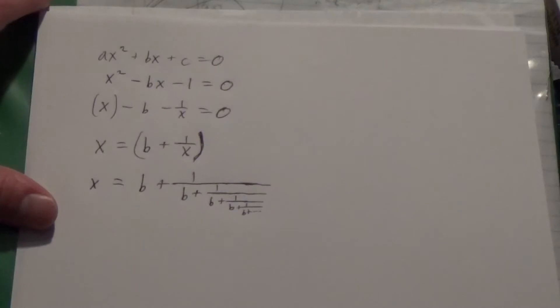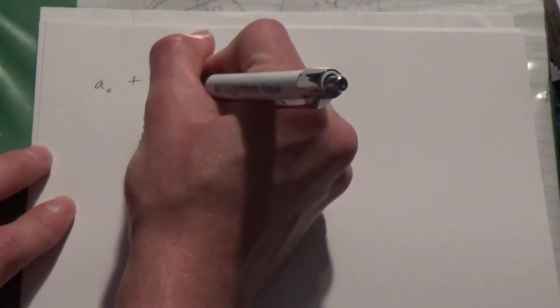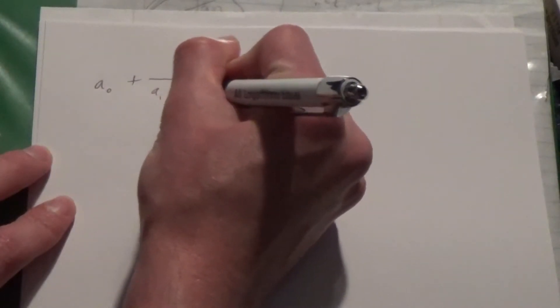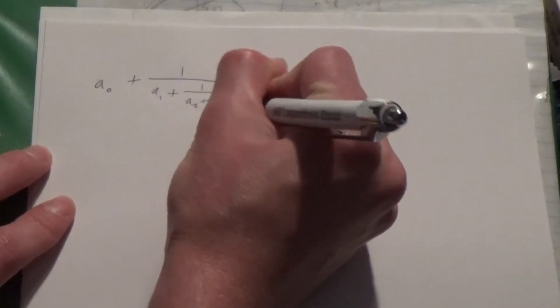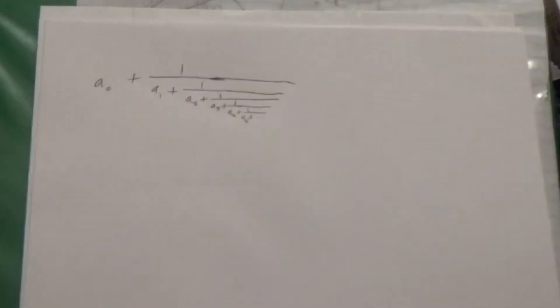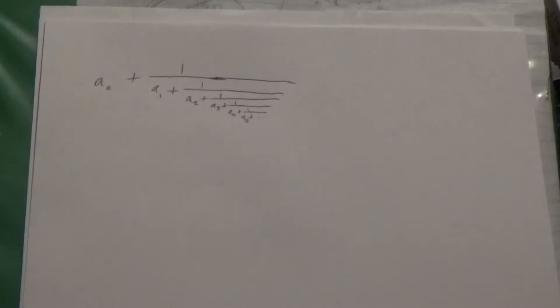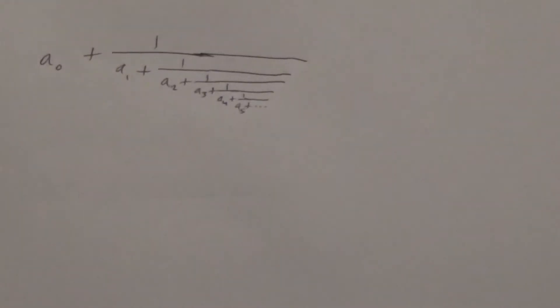But the general form of any continued fraction expansion is, in fact, a zero plus one over a sub one plus one over a sub two plus one over a sub three plus one over a sub four plus, that whole kind of quantity. It's this same sort of structure, but I'd like to emphasize that these a values, a sub zero, a sub one, a sub two, a sub three, they need not be equal to each other.